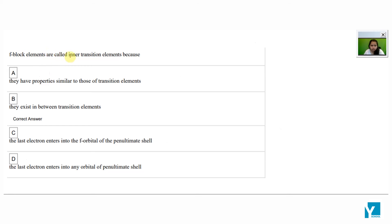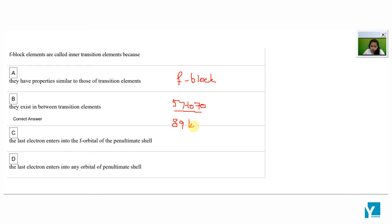F-block elements are called inner transition elements. In the periodic table, the f-block consists of elements 57 to 70, and similarly 89 to 102.